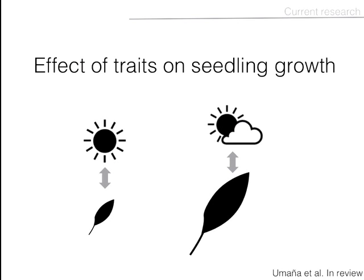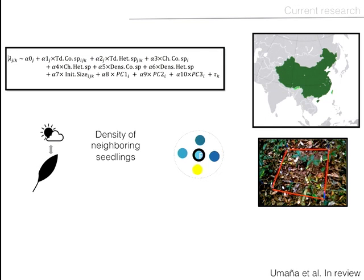In addition to the effect of trait similarity with neighbors, I would say that the phenotype itself will affect seedling performance — whether you have a very small and thick leaf versus a bigger and thinner leaf will have a different effect on growth rate, depending on the environment. For this study, I wanted to predict seedling growth rates based on the effect of the phenotype itself and the effect of trait dissimilarity in the neighborhood.